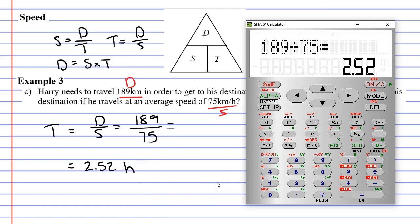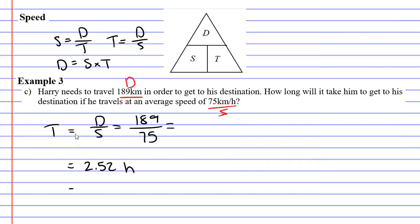Now, while we're at that point, I would like to write it in hours and minutes. To do that, I'm going to press second function DMS, and it gives me 2 hours, 31 minutes, and 12 seconds. In fact, let's write that all down. So that's really 2 hours, 31 minutes, and 12 seconds.